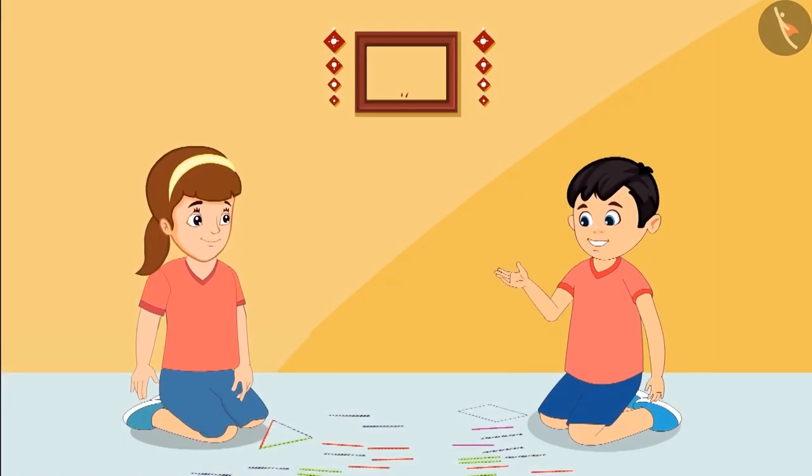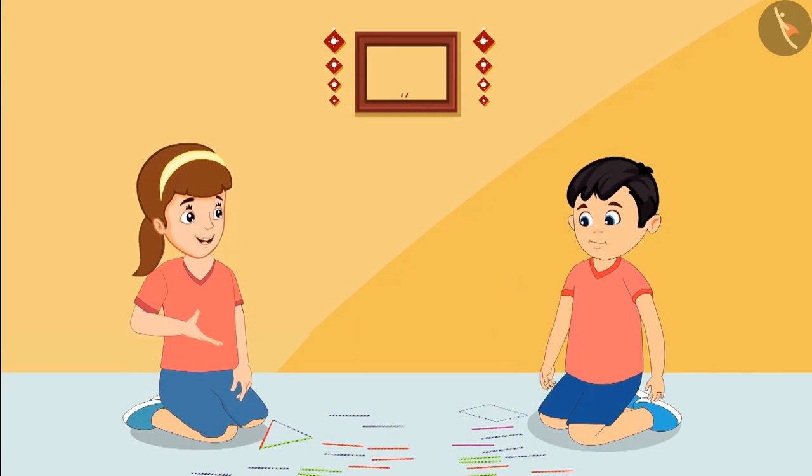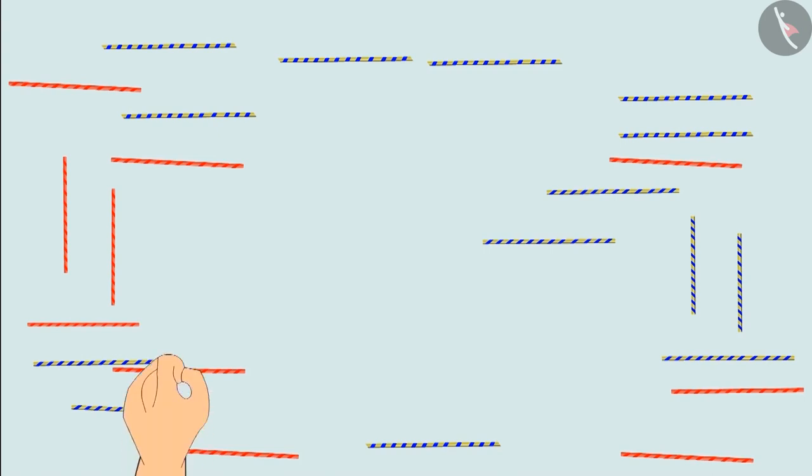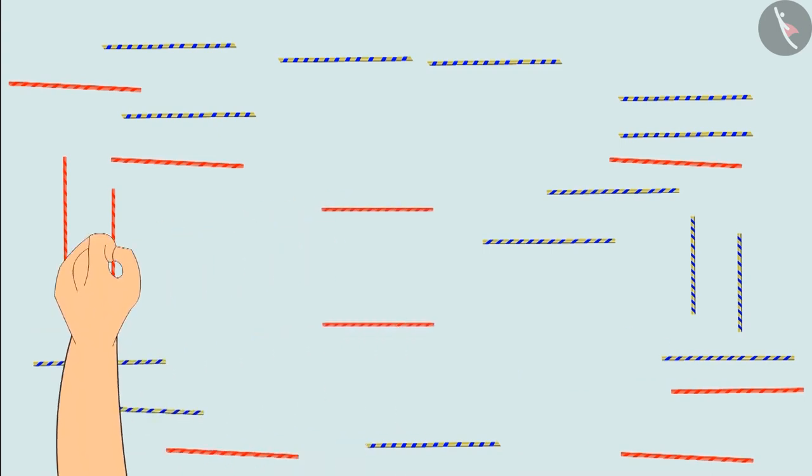It is made of four straws. This means it is a rectangle. Yes, Neha, you are right. Now I will also make a rectangle. Neha, use four equal length straws to make a rectangle.